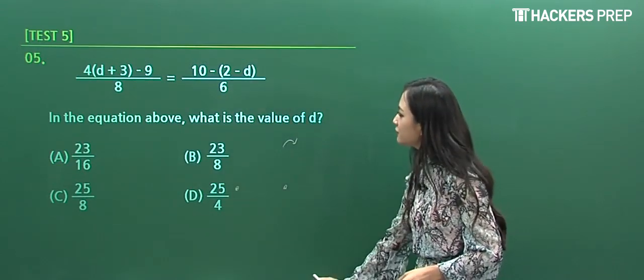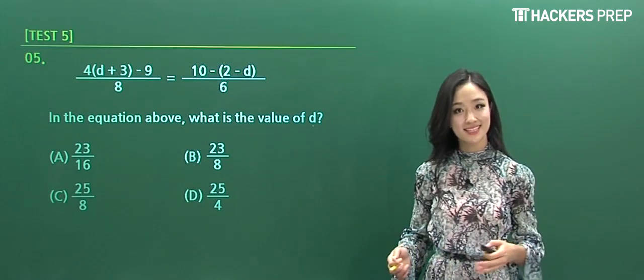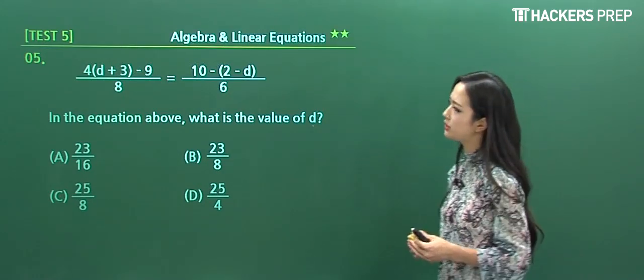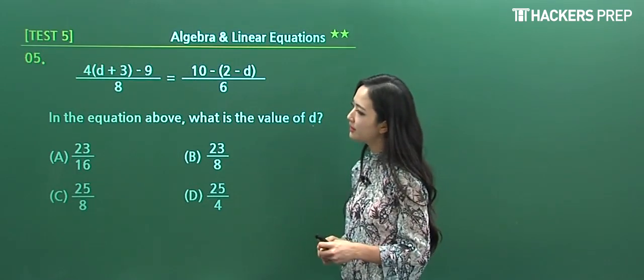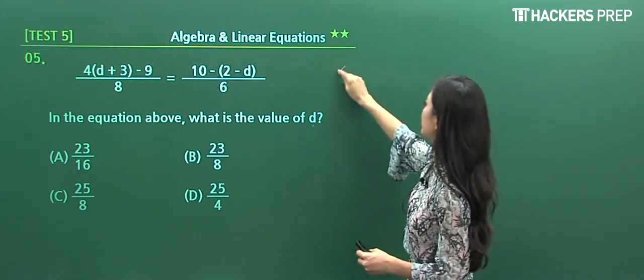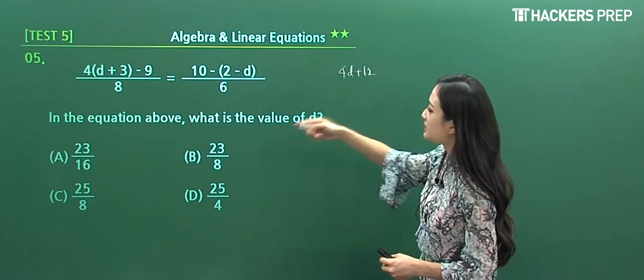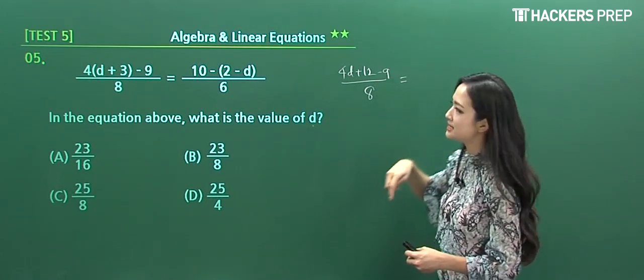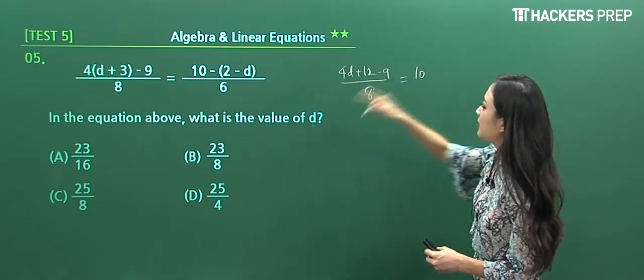Number five: in the equation, what is the value of d? All we have to do is simplify this entire expression. We have a basic linear equation. I'll distribute the terms in the numerator: it becomes (4d + 12 - 9) / 8. On the right-hand side, don't forget to distribute the minus sign, so it becomes (10 + d) / 6.